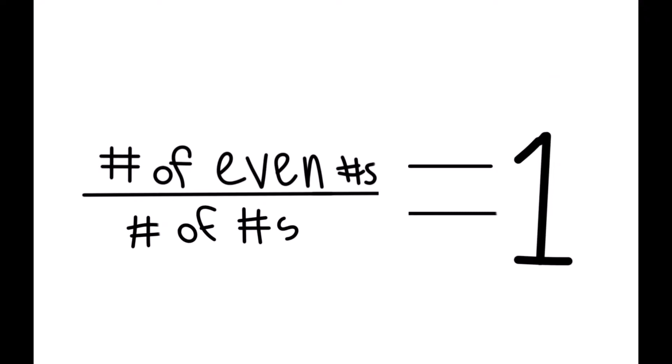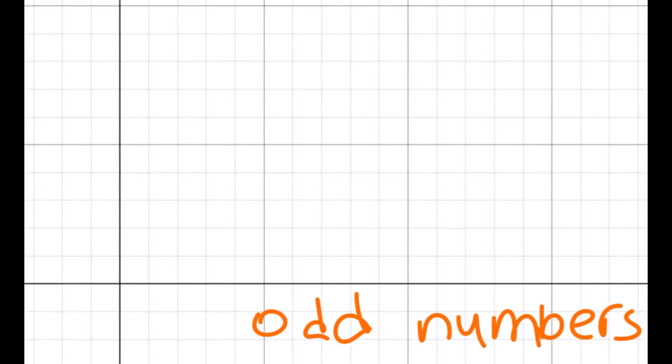Therefore, there are infinitely more even numbers than odd numbers. You can think of it like a graph with the odd numbers on the x-axis and the integers on the y-axis, where each point represents its x value multiplied by 2 to its y value.